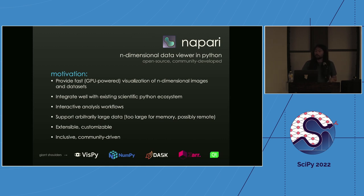A core value of the project is to be an inclusive, community-driven project. This is only possible because we're building on the shoulders of many great scientific Python libraries like VisPy for rendering and visualization, NumPy and Dask for arrays, Zarr for on-disk storage, and the Qt library for GUI components.